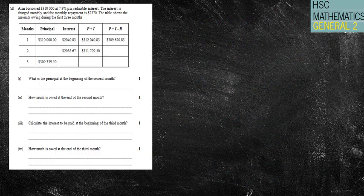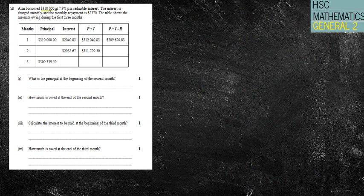Okay, Alan borrowed $310,000 at 7.9% per annum reducible interest. The interest is charged monthly and the monthly payment is that amount.